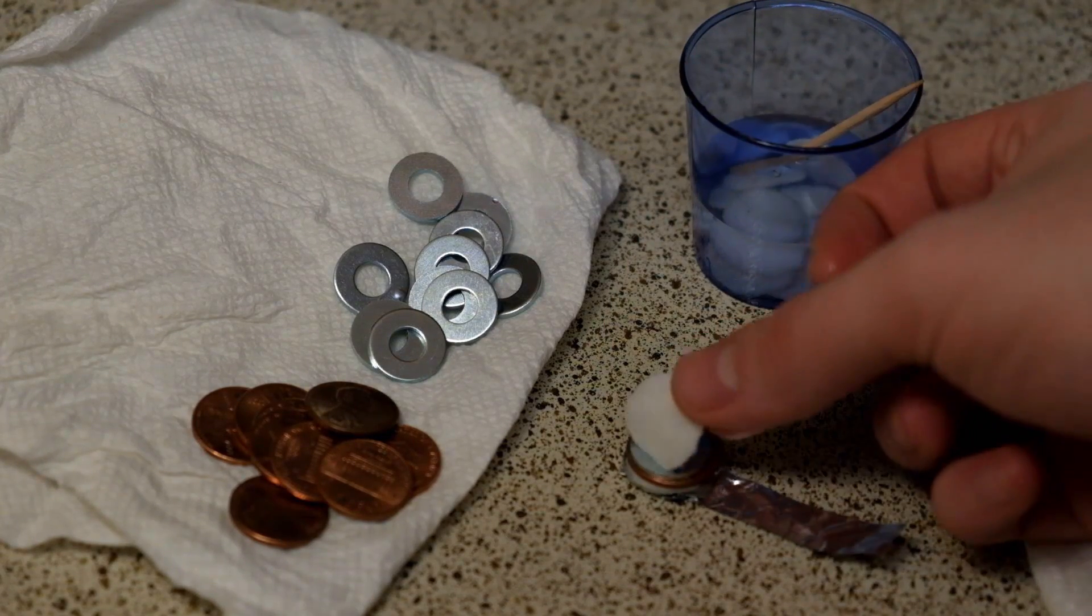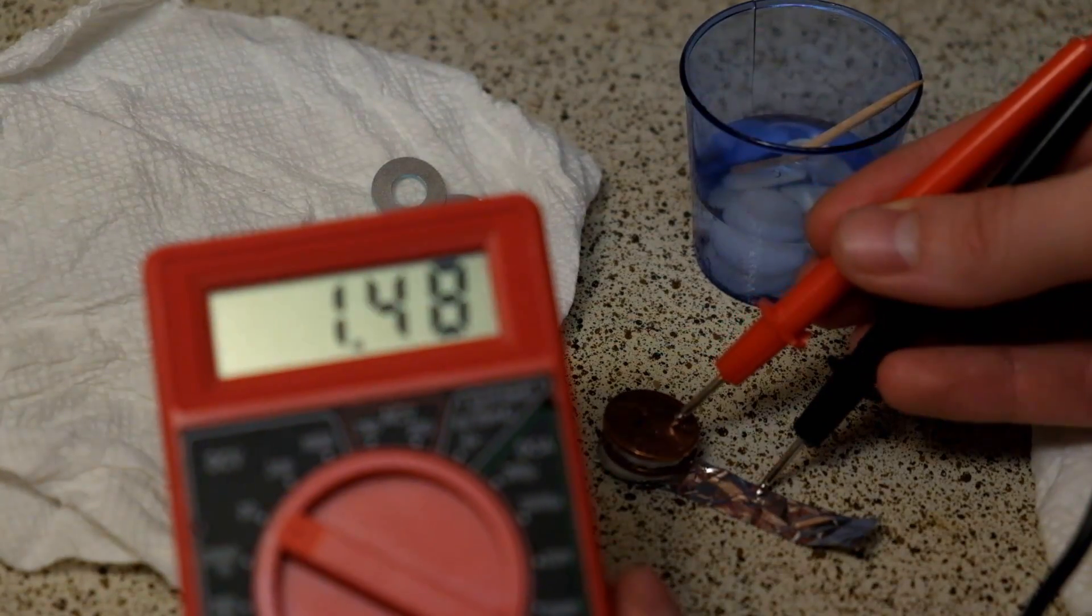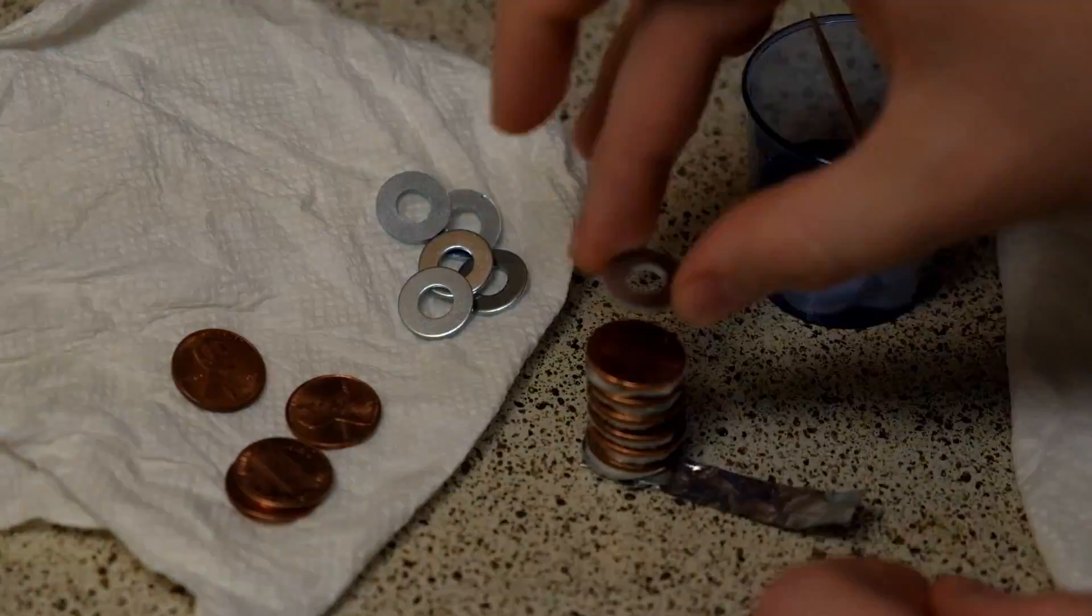Continue to add the three materials in that order: washer, vinegar, and penny. You'll see the voltage start to increase. Our goal is to get at least 6 volts.